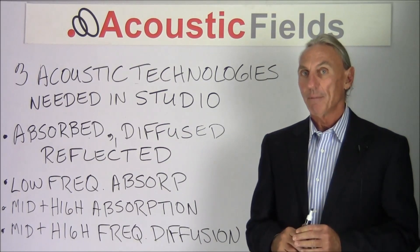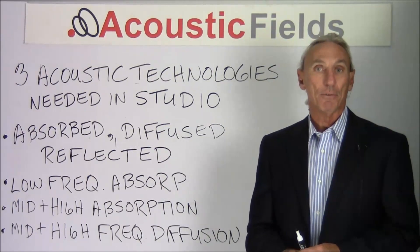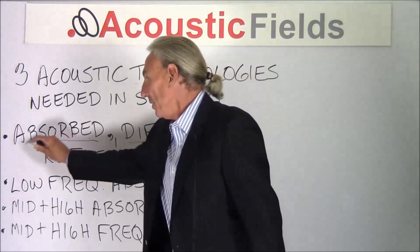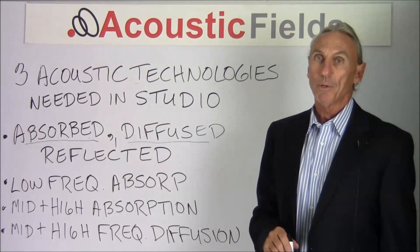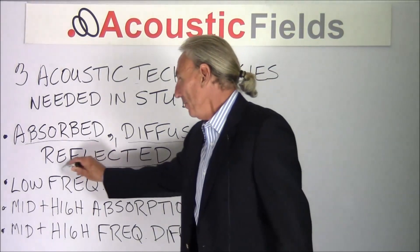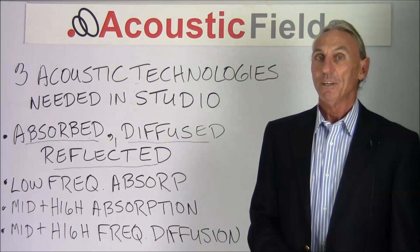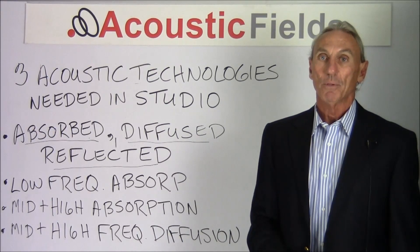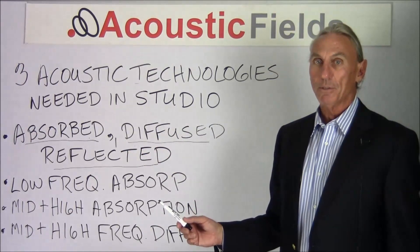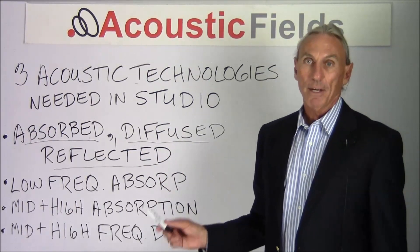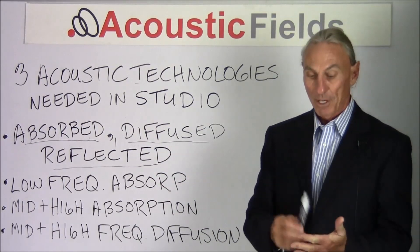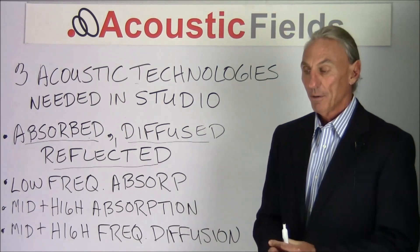There are only three things that can happen to sound: it can be absorbed, it can be diffused, or it can be reflected. Diffusion and absorption are the two major processes we use in our studios with music. We use them to deal with the reflected energy off the surfaces within our room — the walls, floor, ceiling, etc.